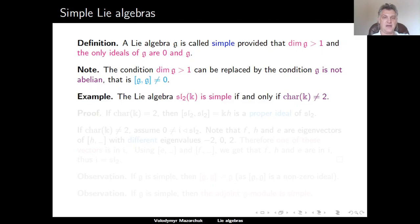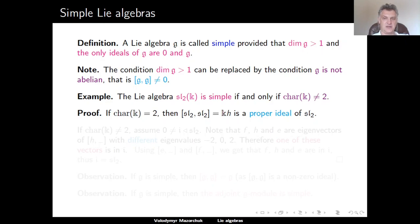For example, the Lie algebra SL2 is simple if and only if the characteristic of the base field is different from 2. Indeed, if the characteristic of the base field is equal to 2, then we have seen in the previous lectures that the derived algebra of SL2 equals the linear span of the diagonal element H. And this is a proper ideal of SL2, so in this case SL2 cannot be simple.